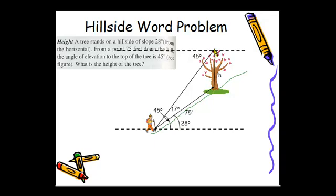This tree is perpendicular to this line. So these two angles make 90 degrees. So we can get the angle inside by subtracting 90 minus 45, which would be 45 degrees.